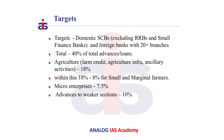Now let us see the targets. The target for domestic scheduled commercial banks (excluding regional rural banks and small finance banks) and for foreign banks with more than 20 branches is 40% of total advances and loans. The sub-target for agriculture — which constitutes farm credit, agriculture infrastructure, and ancillary activities — is 18%.